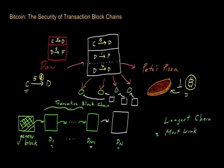And remember that since everyone in Bitcoin ultimately goes with the transaction blockchain that contains the most work — namely this longest chain — Dan has a fighting chance, a hope potentially of being able to pull off this type of fraudulent scheme. The real question now is: how likely is it for Dan to succeed?